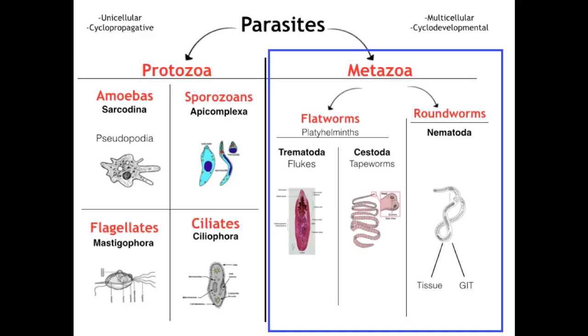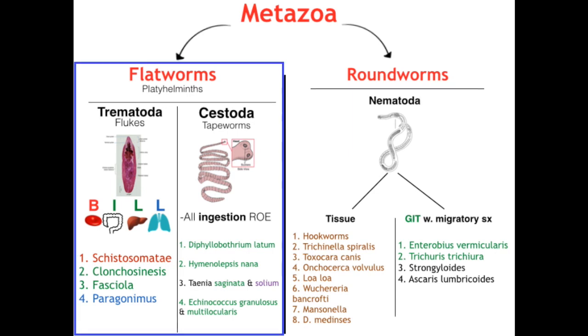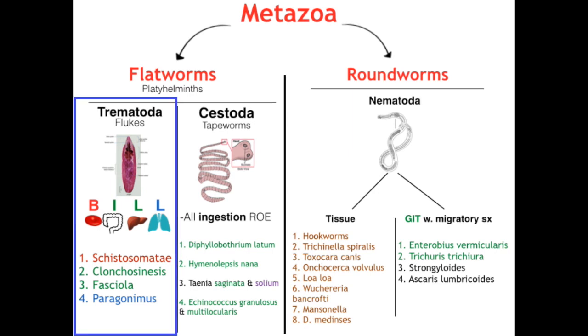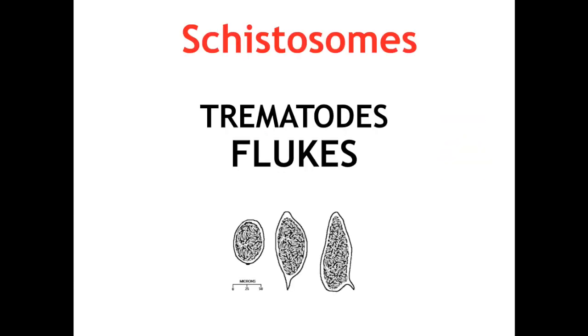The flukes are in the kingdom Metazoa, so they are multicellular parasitic worms. From there, worms are either round or flat, and flukes are in the flatworm phylum — Platyhelminth — in the class Trematoda. In my intro to parasites video, I introduced the mnemonic BILL to remember the four flukes and the four systems they infect: Blood, Intestine, Liver, and Lung.